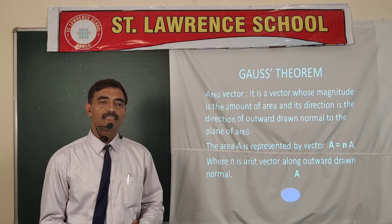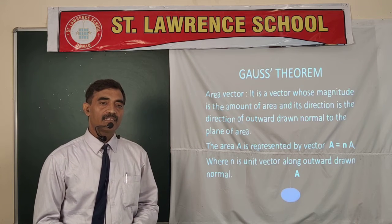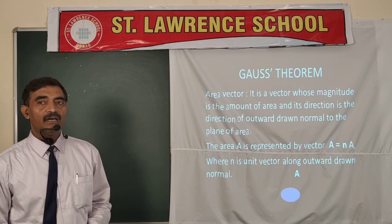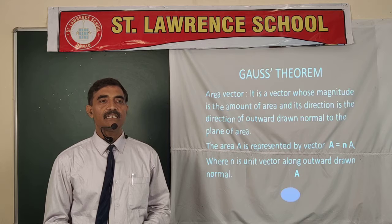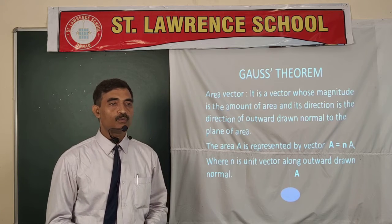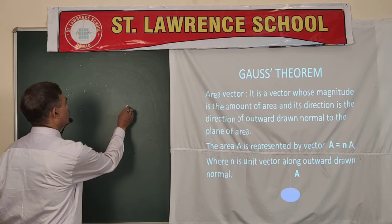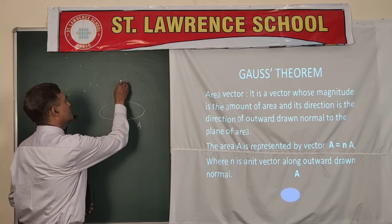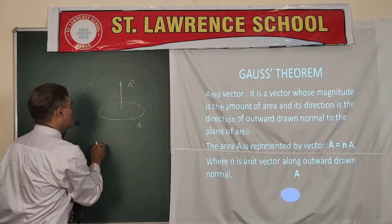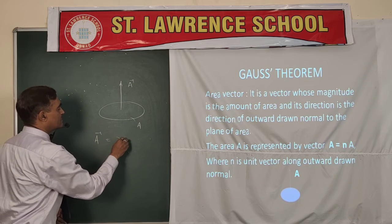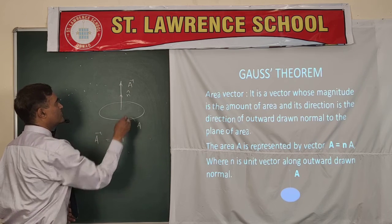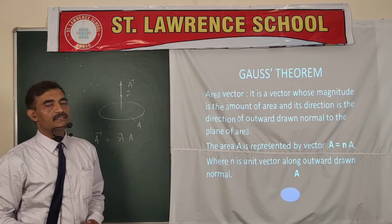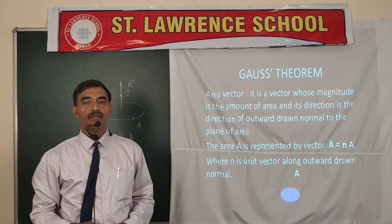Till now we know that area is a scalar, but actually area is a vector quantity. The magnitude of that vector is the amount of that area, and the direction is perpendicular outward — the drawn normal. Suppose this is an area; its magnitude is A, and the area vector is A·n-cap, where n-cap is a unit vector perpendicular to the plane of the area. So this is the area vector, drawn perpendicular outward.